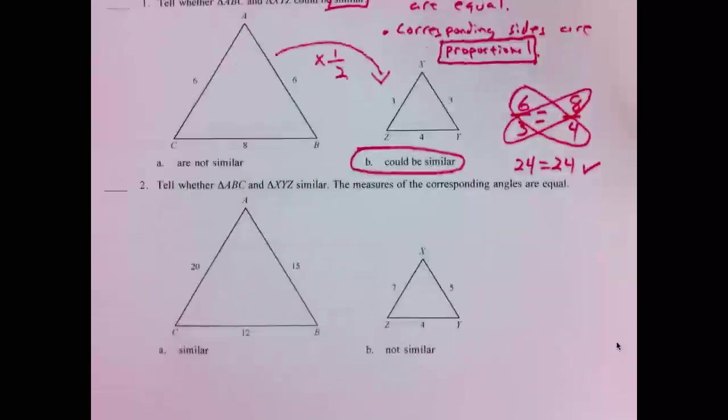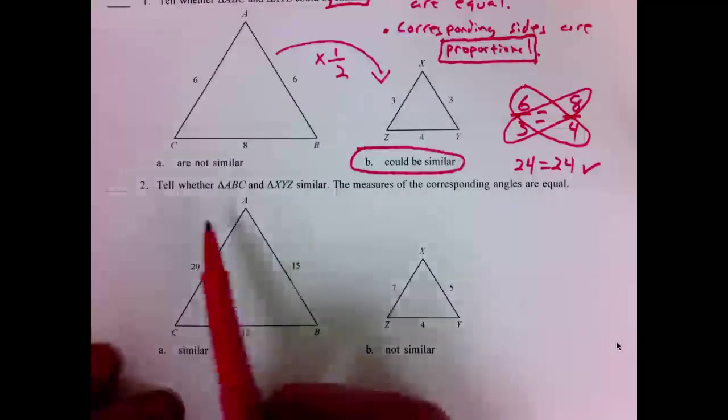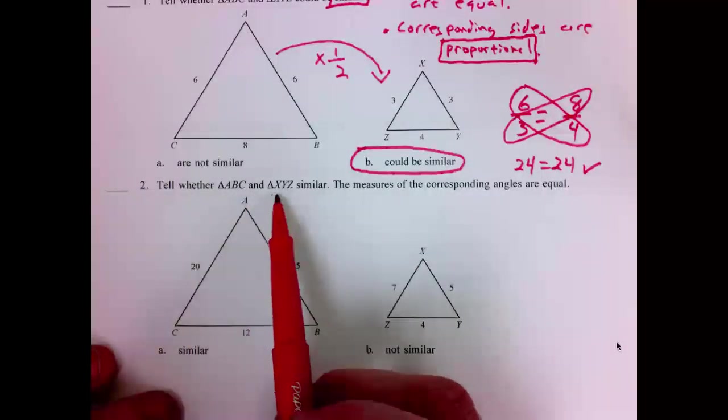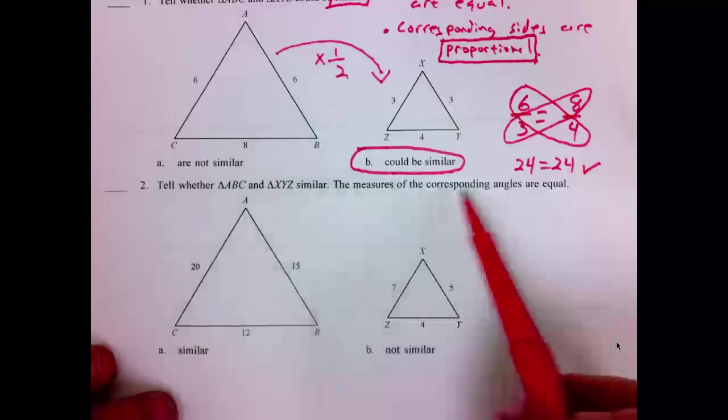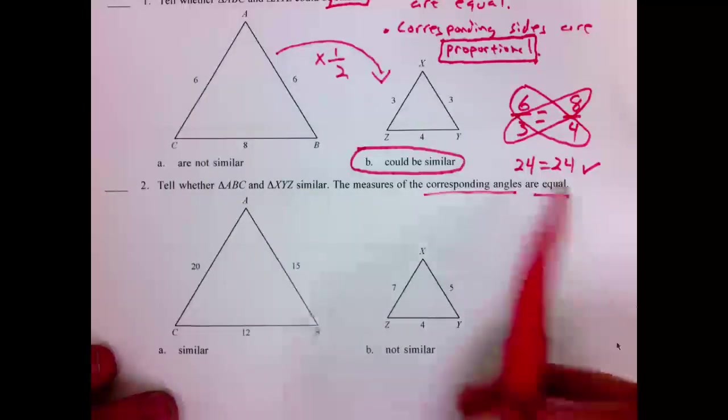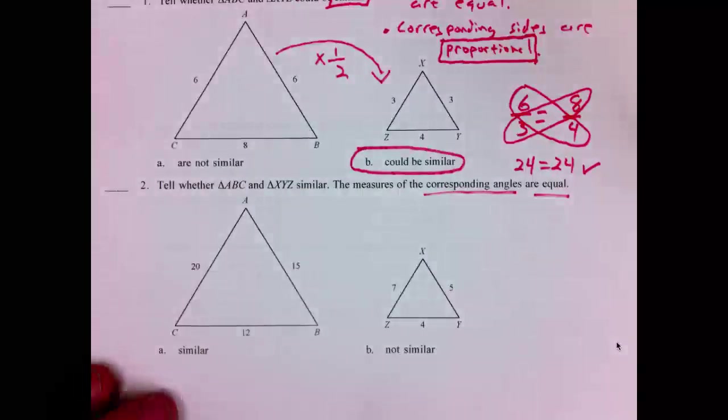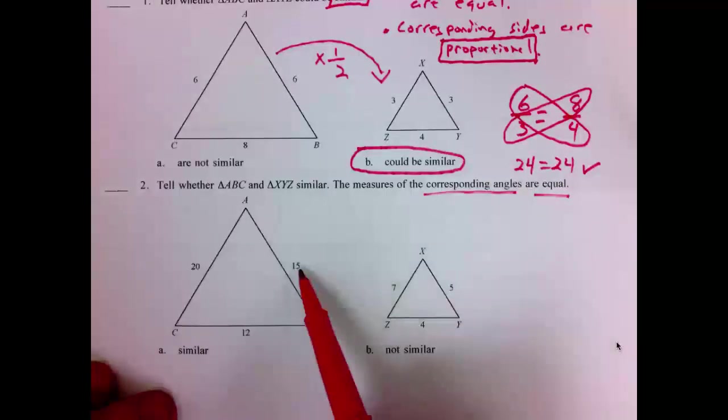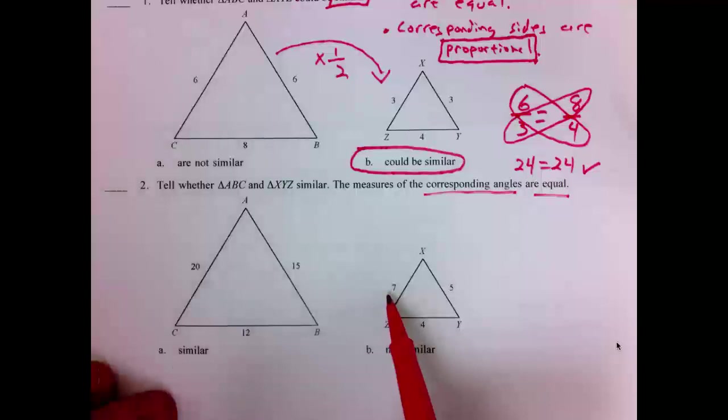Number two. Tell whether triangle ABC and triangle XYZ are similar. The measure of the corresponding angles are equal. We know the corresponding angles are equal. We just need to see if the sides are equal. Well, you see here 12 goes to 4. That's multiplied by one third. So the rest must multiply by one third. Fifteen to five, that's times one third. But 20 to 7 is not times one third. Indeed, these are not similar.